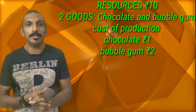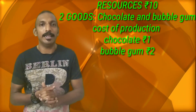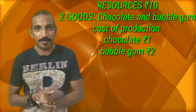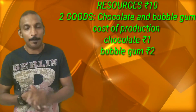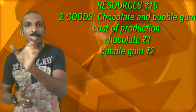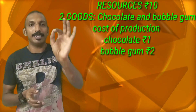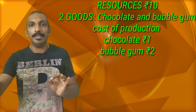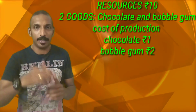If we have the maximum number of chocolates, we will find 10 chocolates. Then the combination is 10 chocolates and 0 bubble gum. What do you think is the combination of 10 chocolates and 0 bubble gum? Now, another combination.